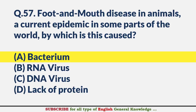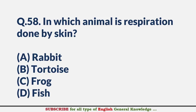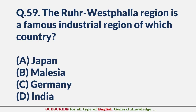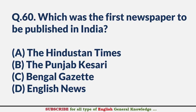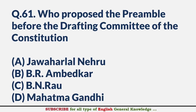In which animal is respiration done by skin? — Answer C: Frog. The Ruhr-Westphalia region is a famous industrial region of which country? — Answer C: Germany. Which was the first newspaper to be published in India? — Answer C: Bengal Gazette. Who proposed the preamble before the drafting committee of the Constitution? — Answer A: Jawaharlal Nehru.